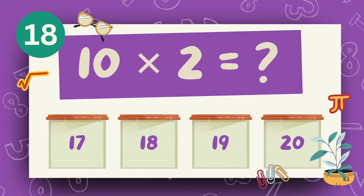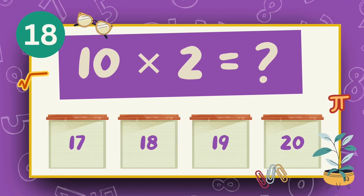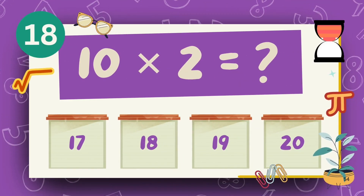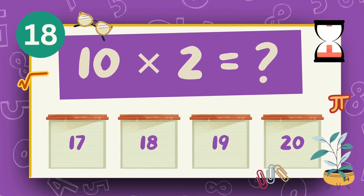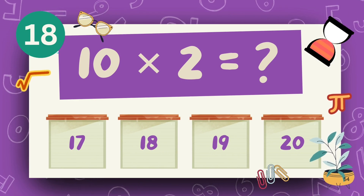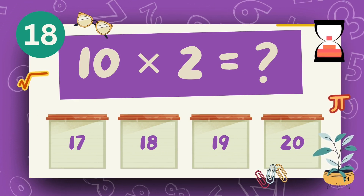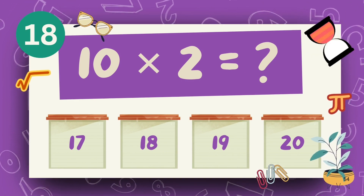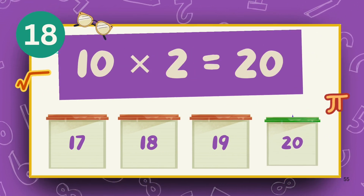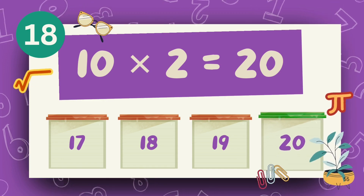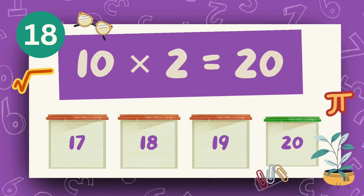What is 10 multiply 2? The answer is 20.